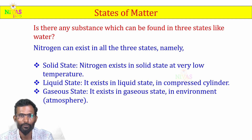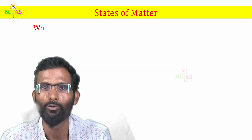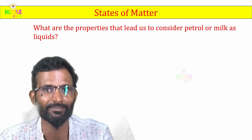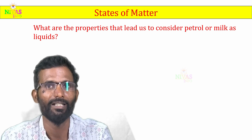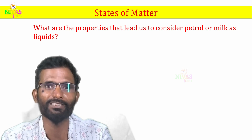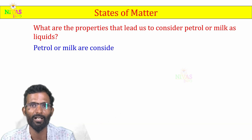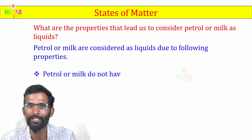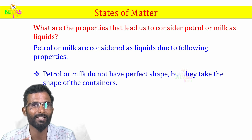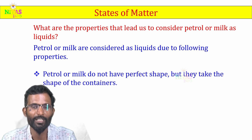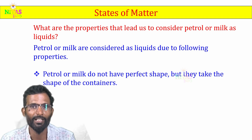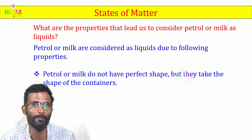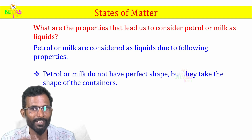What are the properties that lead us to consider petrol or milk as liquids? Petrol, milk, and water — we will tell you the properties that make them liquids. Petrol or milk are considered as liquids due to the following properties: they do not have a perfect fixed shape; they take the shape of the container.